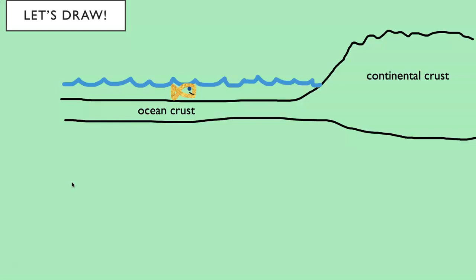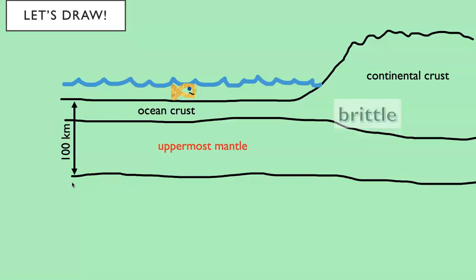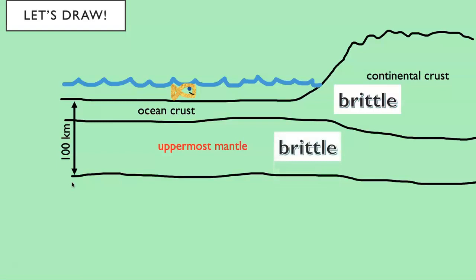What's below the crust? The mantle — but we're going to separate the mantle into different parts. The layer closest to the top is called the uppermost mantle, extending about 100 kilometers from Earth's surface to its base. The crust is brittle — it can break, like a dinner plate shattering when dropped — and that's what happens during earthquakes: faults occur and rocks break. The uppermost mantle is also brittle. Together, these two brittle layers are called the lithosphere — 'litho' means rock — and this is the plate in plate tectonics.